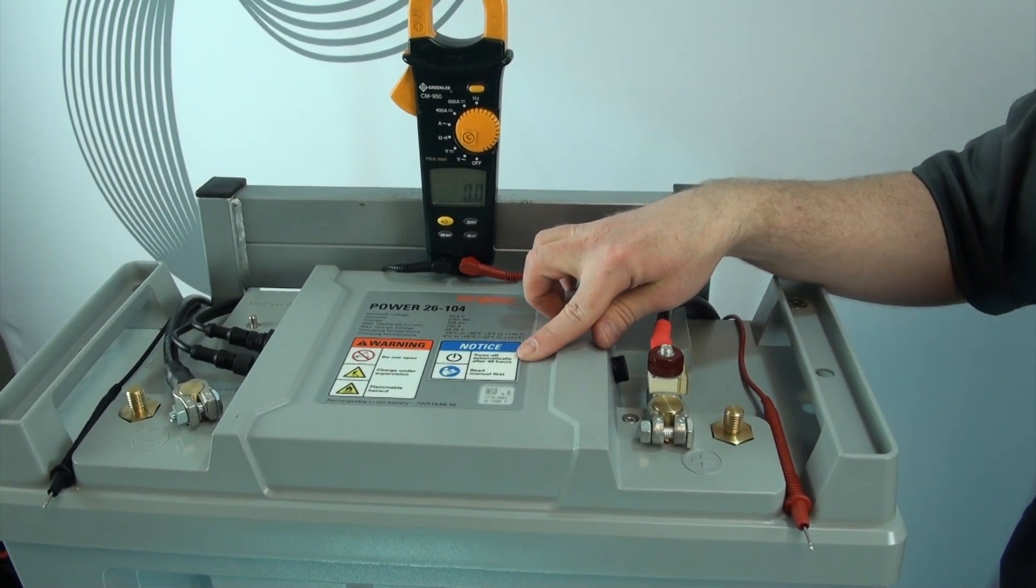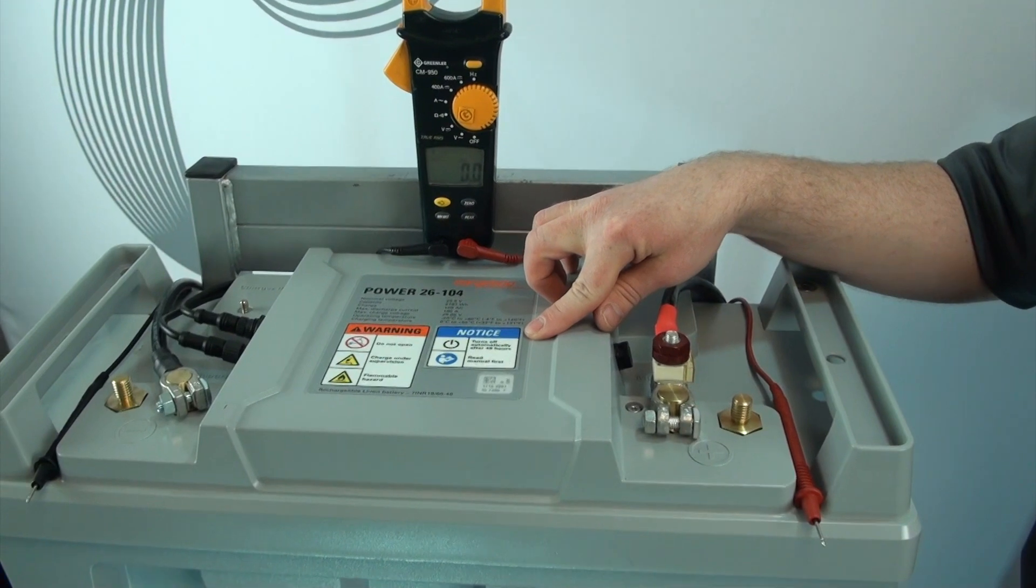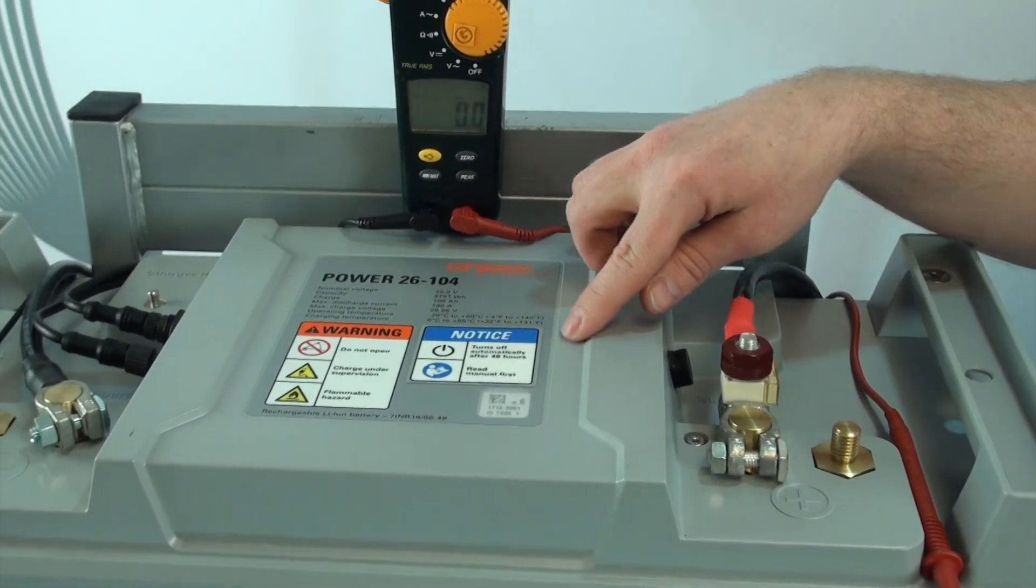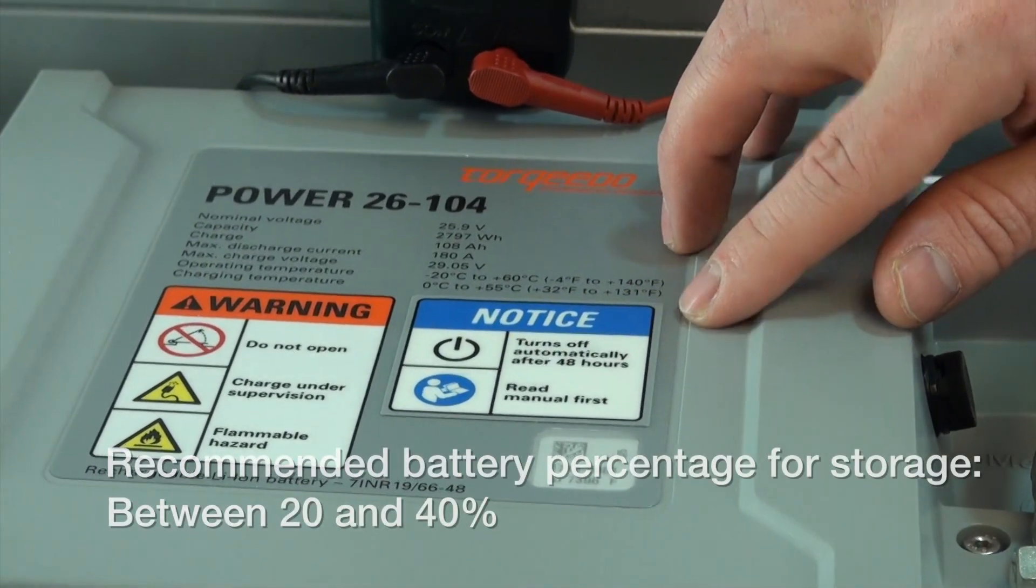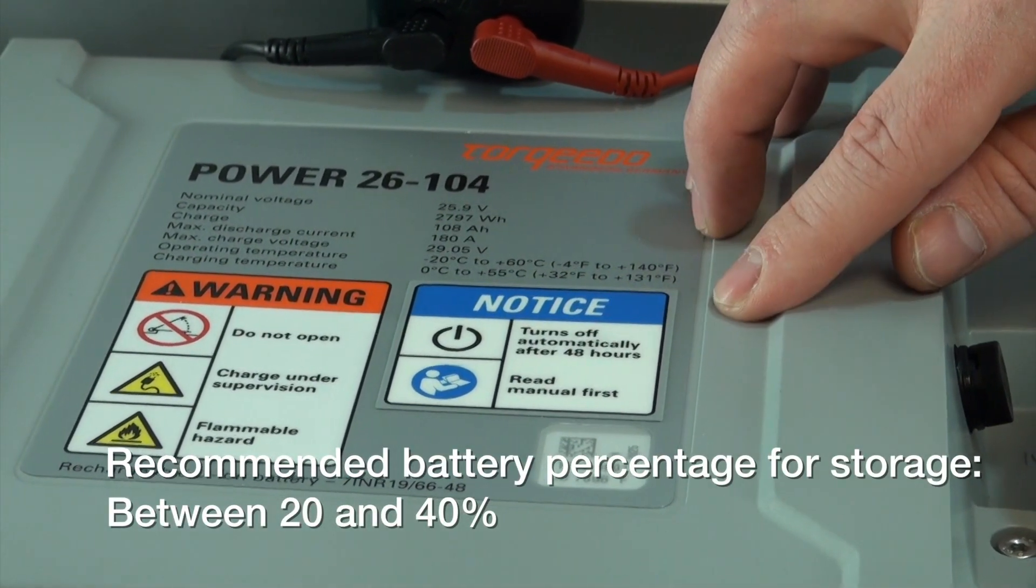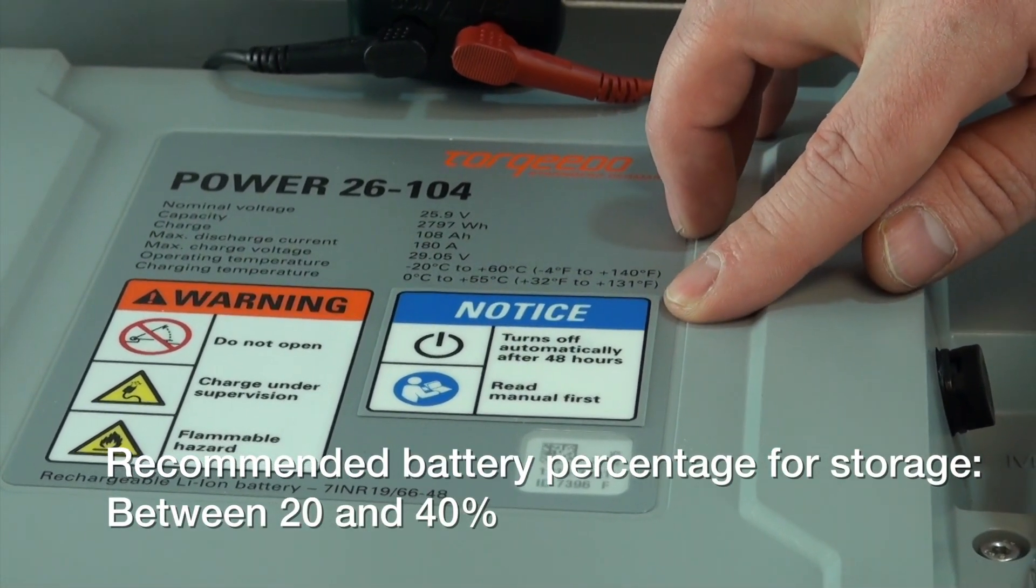Also, if your battery has software that deactivates itself after 48 hours, then the battery will do this. However, make sure that the battery is at the correct charge level prior to that 48 hour shutdown.